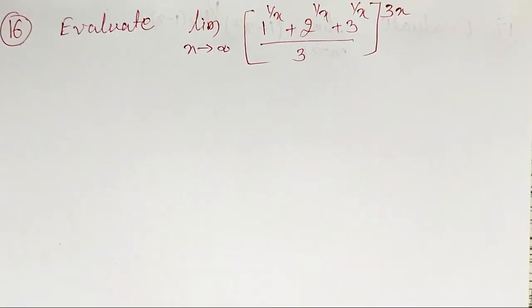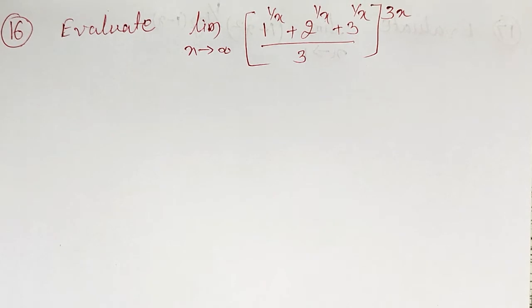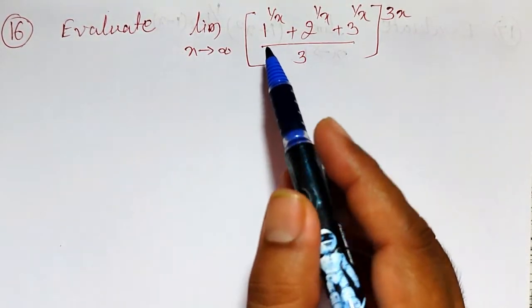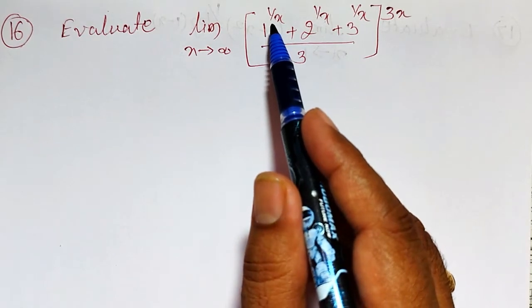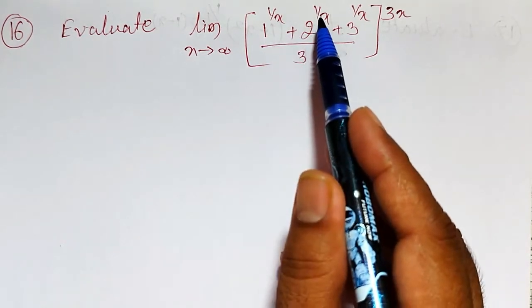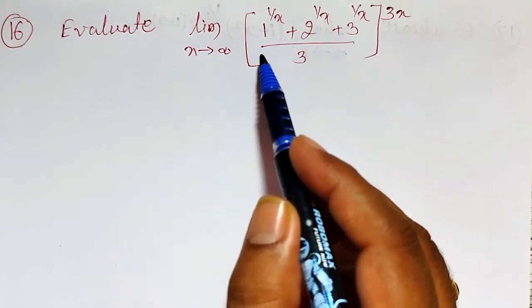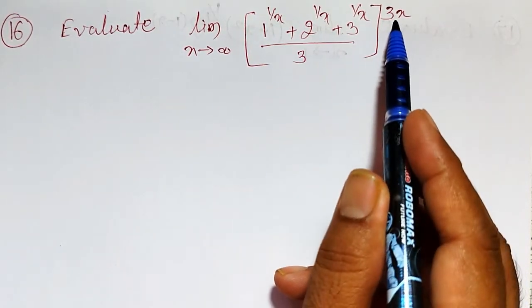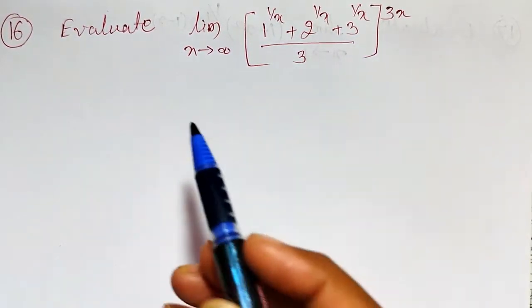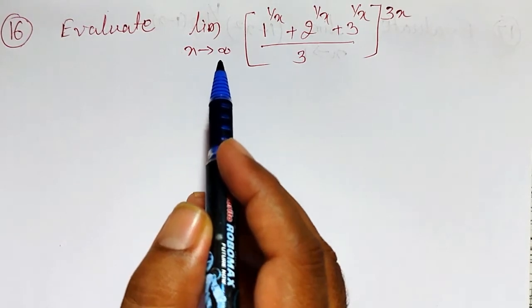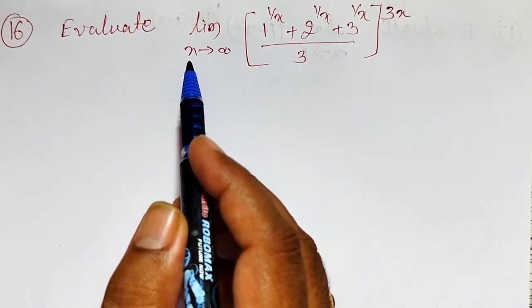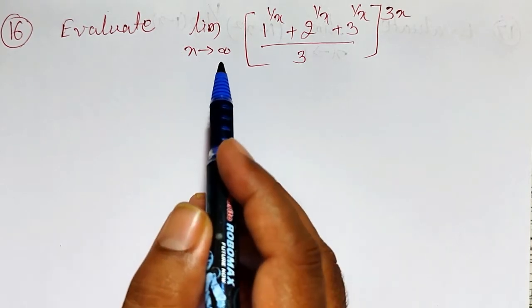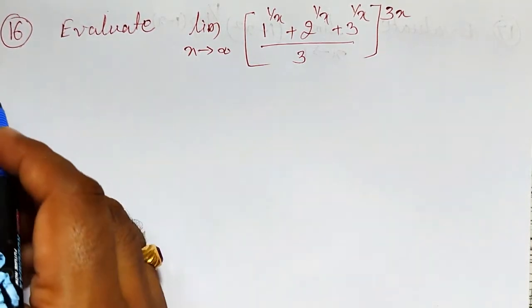In this video I am going to evaluate the limit as x tends to infinity of ((1^(1/x) + 2^(1/x) + 3^(1/x)) / 3)^(3x). Up to now, whatever examples we have solved are x tending to some finite value or x tending to 0, but here it is x tending to infinity.